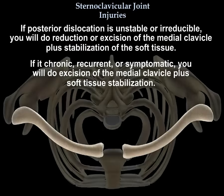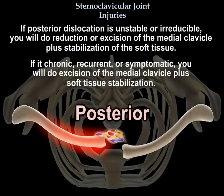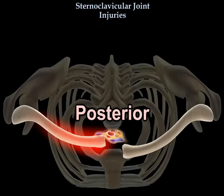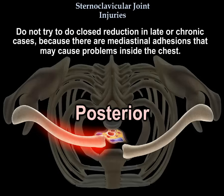If the posterior dislocation is unstable or irreducible, perform reduction or excision of the medial clavicle plus soft tissue stabilization. If it is chronic, recurrent, or symptomatic, perform excision of the medial clavicle plus soft tissue stabilization. Do not attempt closed reduction in late or chronic cases, because there may be mediastinal adhesions that can cause problems inside the chest.